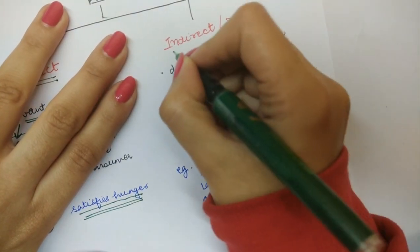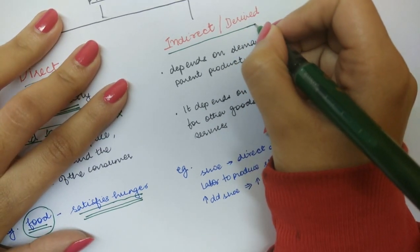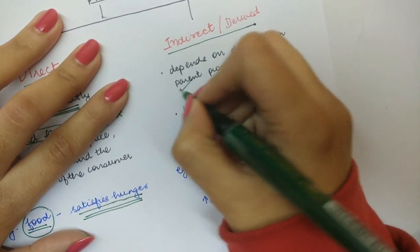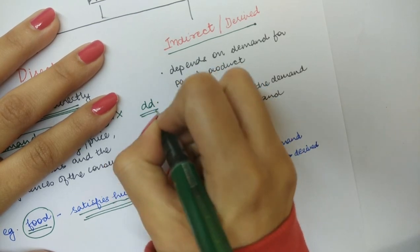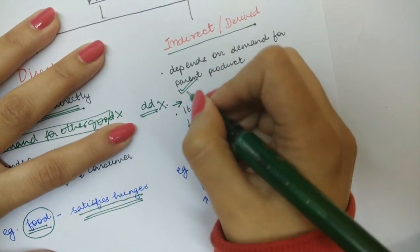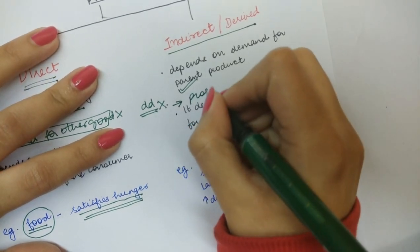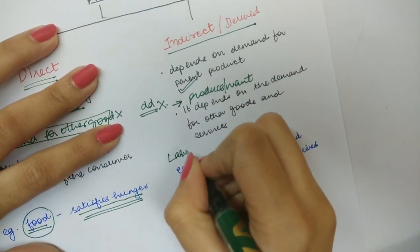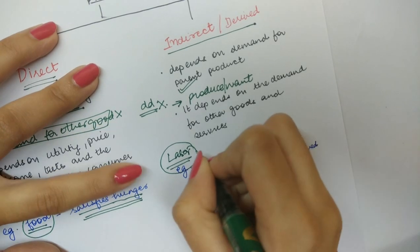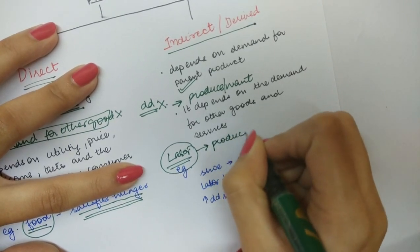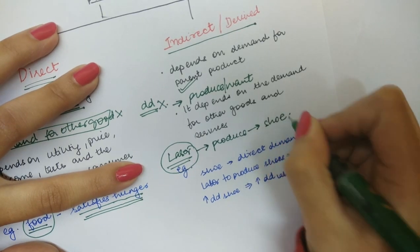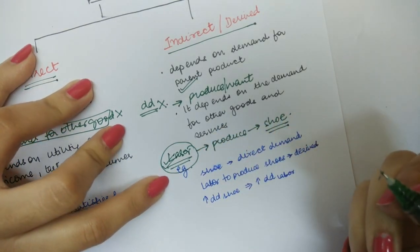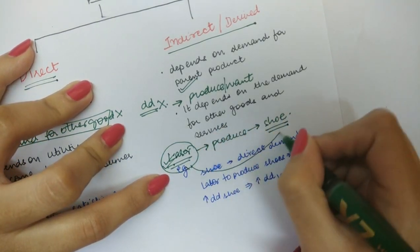When we talk of indirect or derived demand, these depend on the demand for the parent product. You demand this product not for its own sake, but for the sake of the product that you produce or the product that you want. For example, labor — when you demand labor, you demand it to produce a certain commodity, say shoes. So the demand for labor is a derived demand because you demand labor because you want shoes.